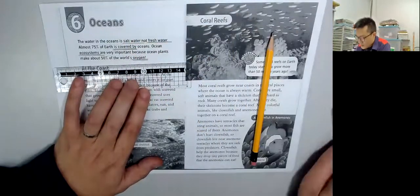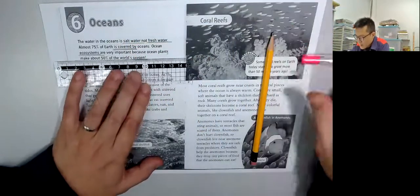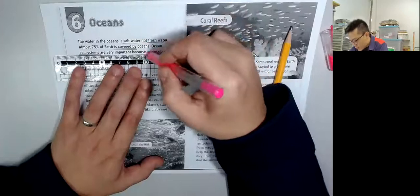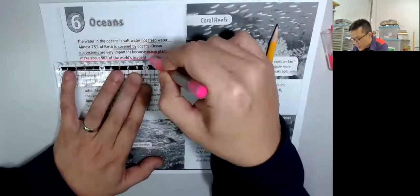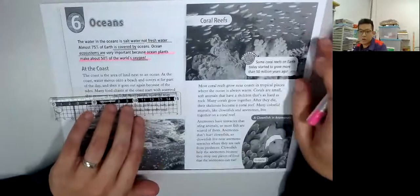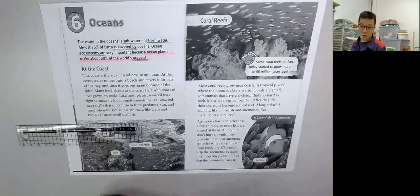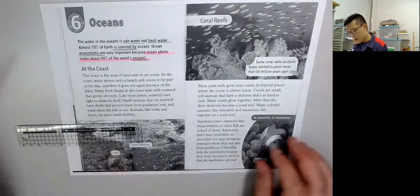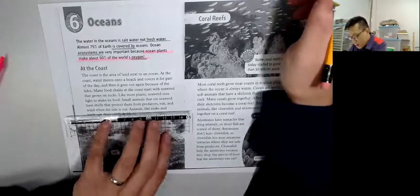At a coast, the coast is the area of the land next to the ocean. At a coast, water moves onto a beach. 潮漲潮退。